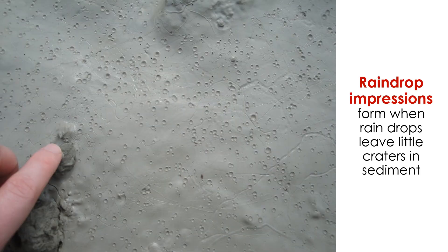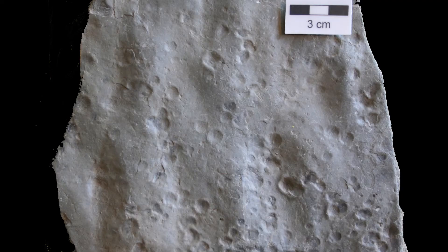If there is an opposite of mud cracks, it would probably be raindrop impressions. Just as they sound, these sedimentary structures form when rain falls on soft sediment, like mud, and the drops create little craters. If the craters are filled in by sediment deposited on top of the layer, the raindrop impressions are preserved in the sedimentary rock.